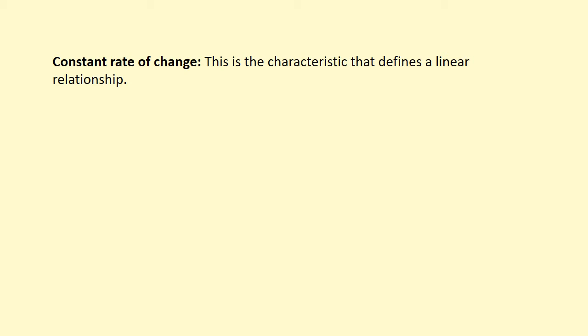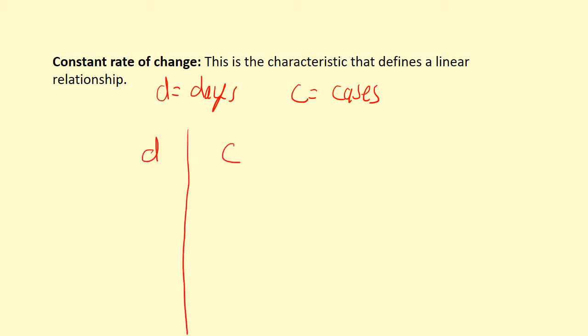What would a nonlinear relationship look like? Here's one example: recently it was reported in the news that the number of coronavirus infections doubled every three days. Let D equal days and C equal the number of cases. At the beginning we have one case; three days later we have two cases; three days after that, double that number; three days after that, double again.